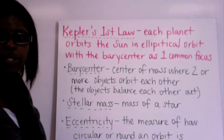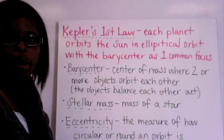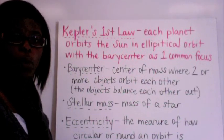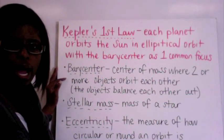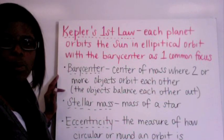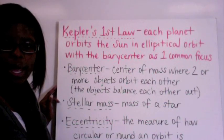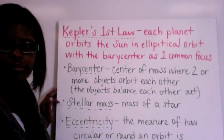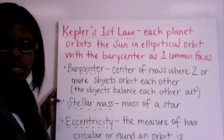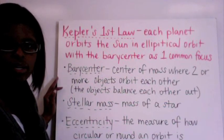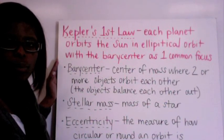Kepler's first law states that each planet that orbits the Sun is going to orbit the Sun in an elliptical orbit with the barycenter as the common focus. A barycenter is the center of mass where two or more objects orbit each other and this is going to allow the objects to balance each other out. We have stellar mass which is the mass of a star and eccentricity is the measure of how circular or round an orbit is. In order to determine the stellar mass we must know the barycenter which is the center in which each planet orbits the Sun in an elliptical orbit.